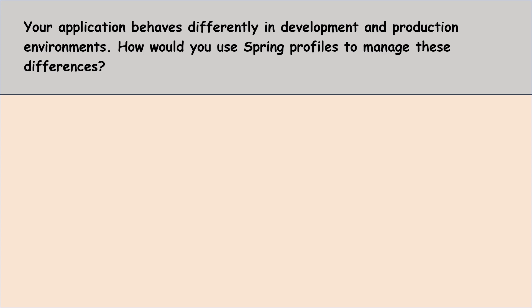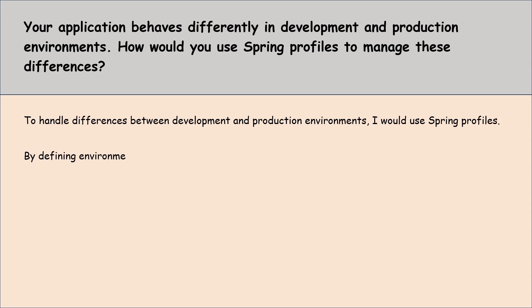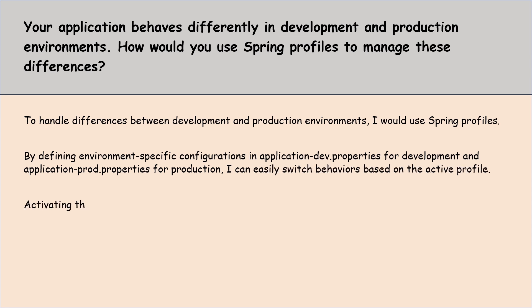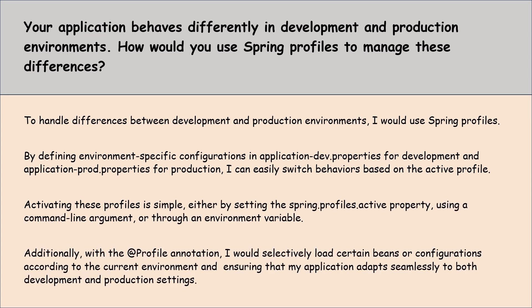Moving to the next question: your application behaves differently in development and production environments. How would you use Spring profiles to manage these differences? I would use Spring profiles by defining environment-specific configurations in application-dev.properties for development and application-prod.properties for production. I can easily switch behaviors based on the active profiles by setting the spring.profiles.active property using a command line argument or through an environment variable. Additionally, with the Profile annotation I would selectively load certain beans or configurations according to the current environment.